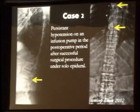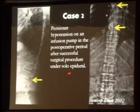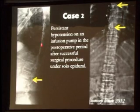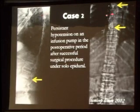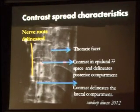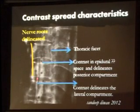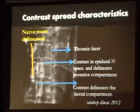Another patient had persistent hypotension in the postoperative period after surgery successfully done under lumbar epidural. Again L3-L4 catheterization, and you can see contrast lying in the thoracic area going up to the cervical area. In the blown-up figure, you can see the thoracic facet, contrast in the posterior compartment of the epidural space, and contrast in the lateral compartment. So what is this compartment we are dealing with? This is something very unusual.